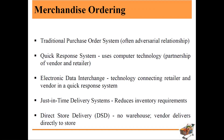In merchandise ordering, there is the traditional purchase order system done through an adversarial relationship. Then there is the quick response system using computer technology — the retailer-vendor partnership feeds information into a computer system and the vendor delivers the product. There is also Electronic Data Interchange (EDI), which connects retailers and vendors through technology. In the quick response system, inventory details are installed in the software; as sales happen, the vendor gets a response — 10 stocks limited, 5 stocks limited, and so on — and the system automatically generates a purchase order based on demand.